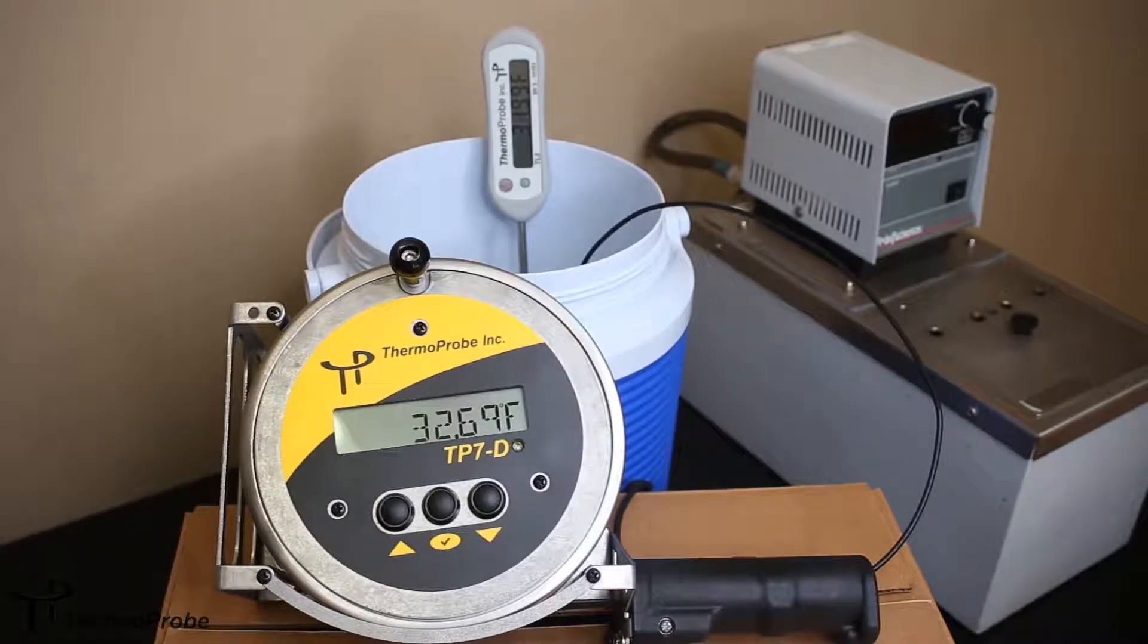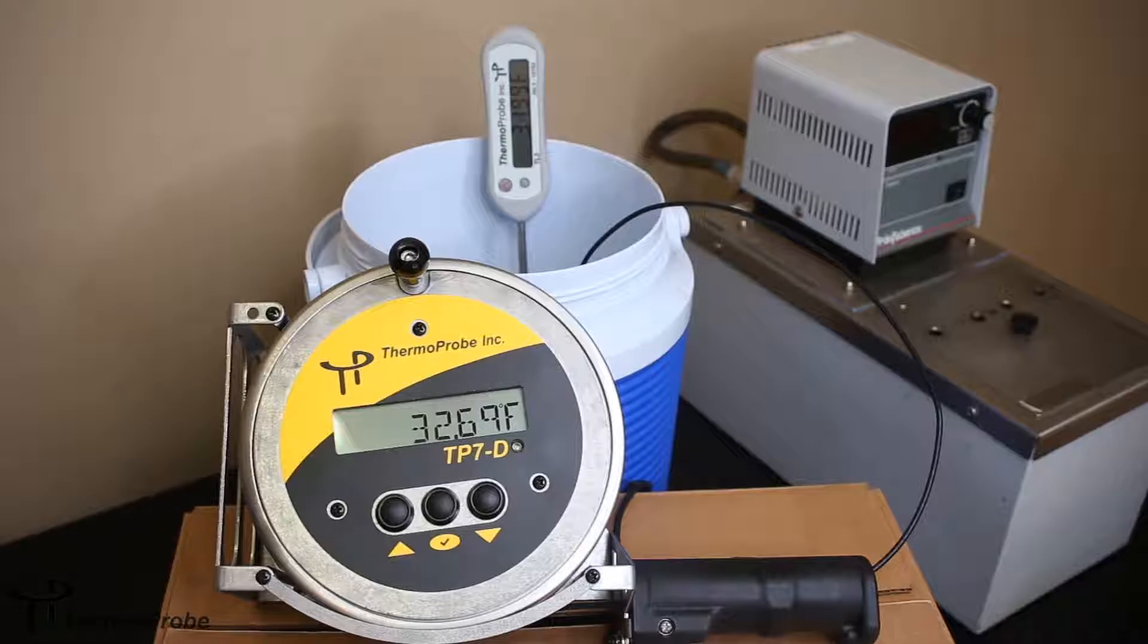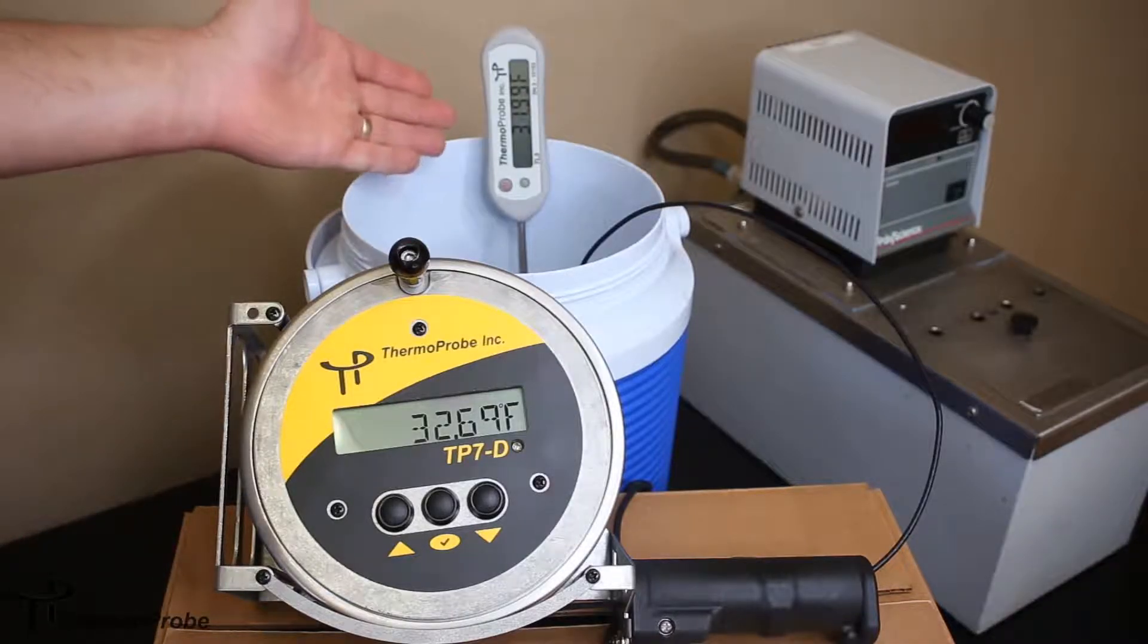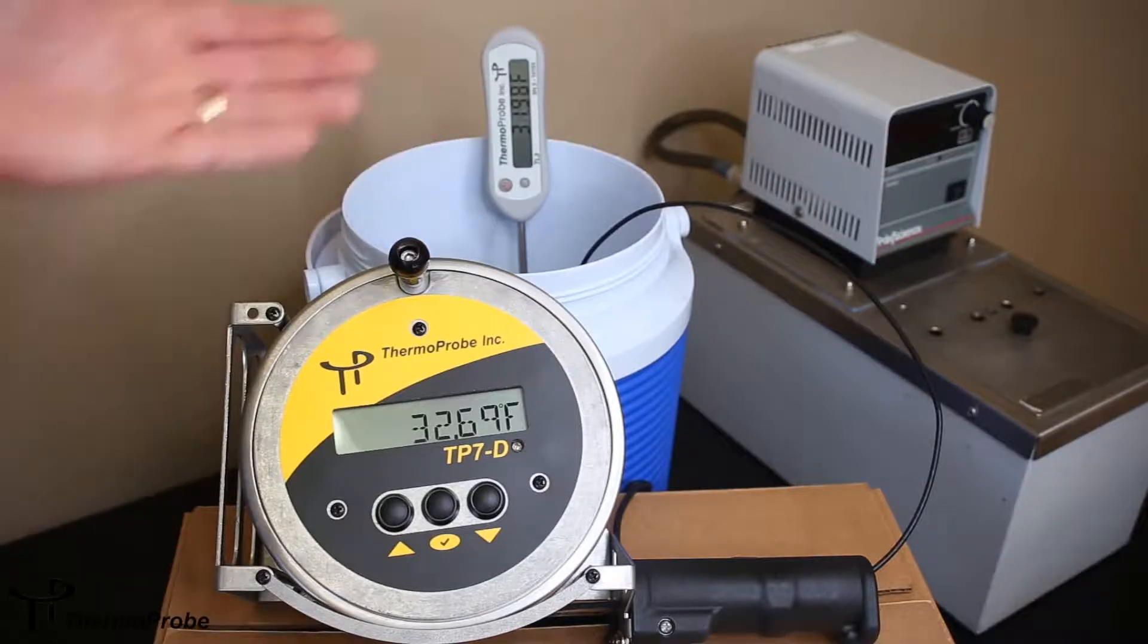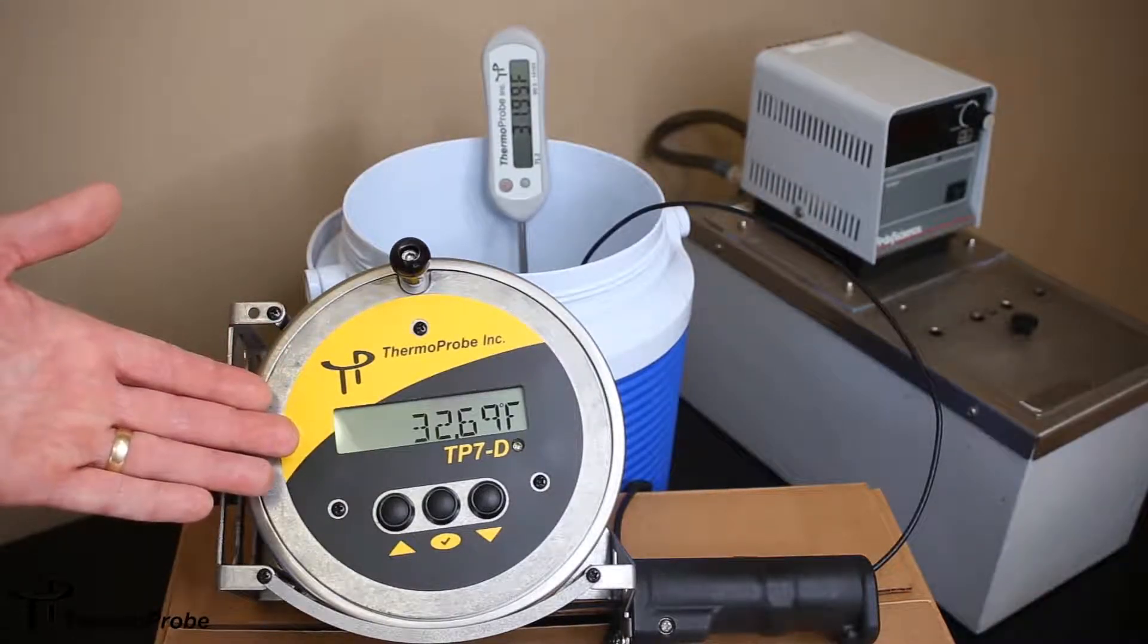This is an illustration of how to do a calibration adjustment to a TP7D or a TP9A. The equipment needed in this case will be an ice bath, a calibrated reference, and this is a TL3, obviously the gauging thermometer that needs to be adjusted.